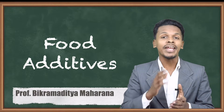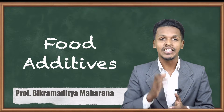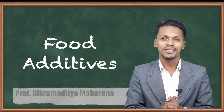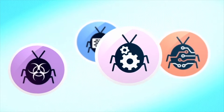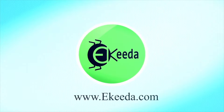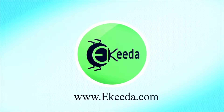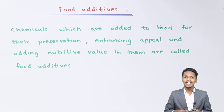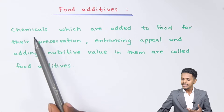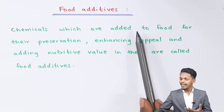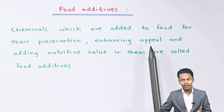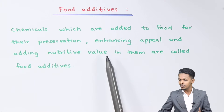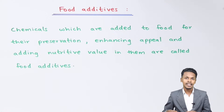So what are food additives and what are the main categories of it — this is what I am going to talk about in this topic. Food additives are the chemicals which are added to the food for their preservation, for enhancing appeal, and adding nutritive values in them.